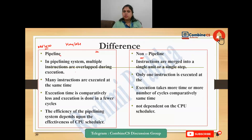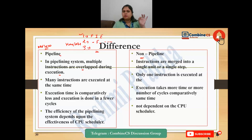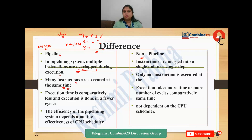In a pipeline system, multiple instructions are overlapped during execution. Overlapped means that if one instruction is being fetched, another is being decoded, another is being executed - this is executing in overlapped fashion. Many instructions are executed at the same time because at the same clock pulse different instructions are at different stages. So one person starts here, the other starts here, and so on.